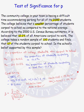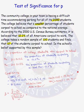Here's the problem. The community college in your town is having a difficult time accommodating parking for all of its 3,000 students. The college believes that a smaller percentage of students carpools to school compared to the national average. According to the 2000 U.S. Census Bureau estimates, it is believed that 12.2% of all Americans carpool to work. The college takes a random sample of 130 students and finds that 12 of the students carpool to school. Is the school's belief supported by this sample? We will do a test of significance.